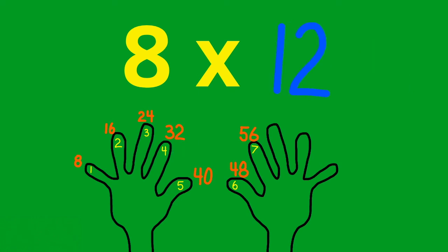Let's try 8 times 12. We know that half of 12 is 6, so let's use 6. 8 times 6 is 48, so 48 times 2 will equal 8 times 12. 48 times 2 is 96.